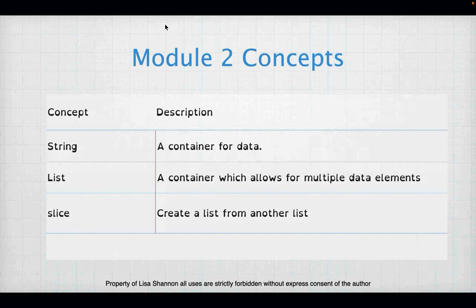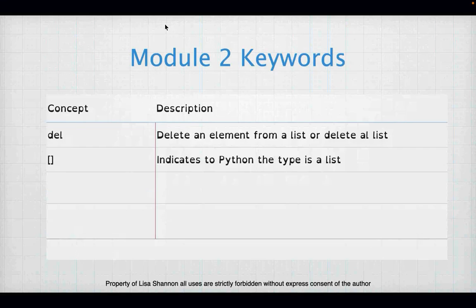We've got some new concepts. A string is just a container for data. A list is a container that can hold multiple data elements — you can have a list with lots of strings, or a string and an int and a float. Slice lets you create a list from another list. Two new keywords: 'del' (D-E-L), which deletes an element or the entire list, and square brackets, which indicate to Python that the type is a list. This week we're adding the list type to strings, integers, and floats.